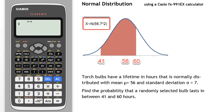Torch bulbs have a lifetime in hours that is normally distributed with mean μ equals 56 and standard deviation σ equals 7. Find the probability that a randomly selected bulb lasts in between 41 and 60 hours. So we try to find the probability associated with this shaded pink area here.